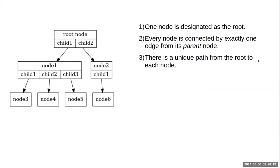There are two ways to define a tree. The first: you designate one node as the root; every node is connected by exactly one edge from its parent node; and if you want to get from the root to any node there is a unique path — you can't have two different ways to get there. That's also why a family tree is not a computer science tree, because in a family tree there can be more than one path to a family member.